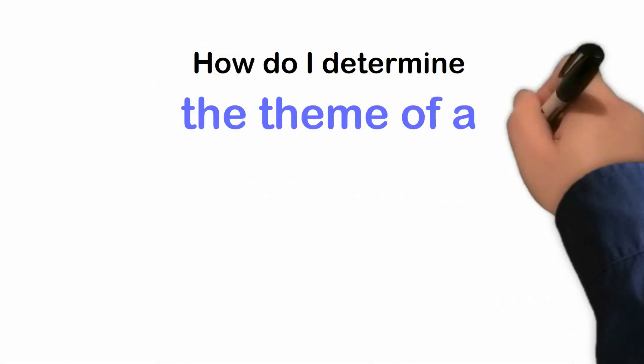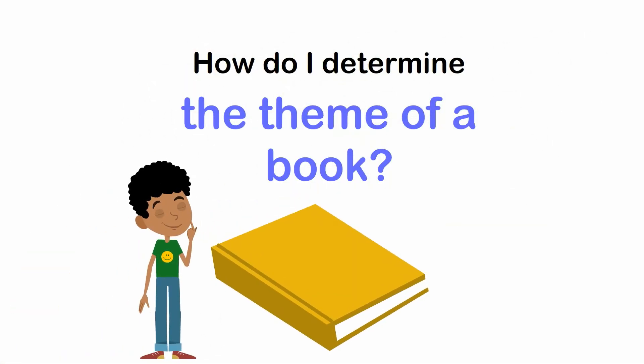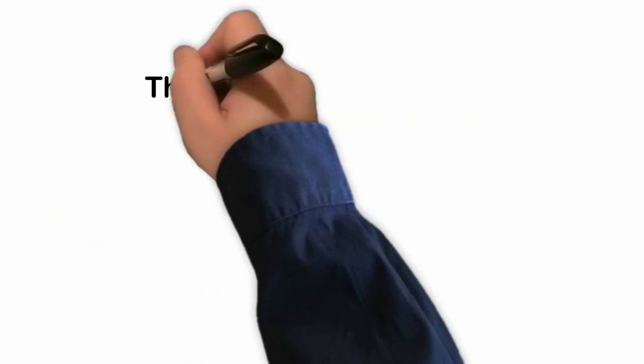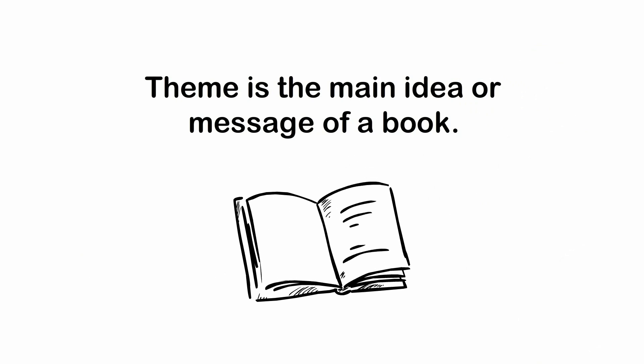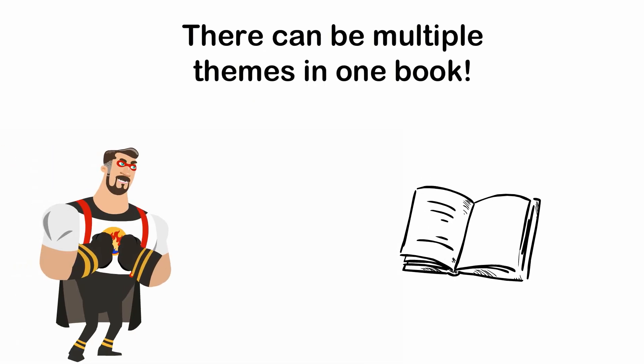How do I determine the theme of a book? Theme is the main idea or message of a book. This may be hard to hear, but determining the theme of a book is challenging. There can be multiple themes in one book.